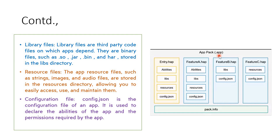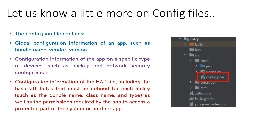The config.json file is the configuration file of the app. It is very helpful as it declares the abilities of the app and the permissions required by the app. You can see how the tree is structured with config.json highlighted. It has global configuration information of the app, which could include the bundle name, the vendor, and the version details. It also has configuration information for the app on a specific type of device, including network security configuration.